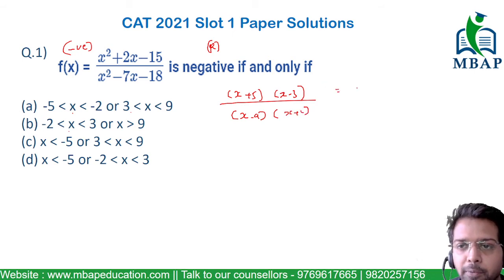So the roots of the given numerator will become -5 and +3. And the denominator will become +9 and +2. Now let's try to plot these roots on a number line.